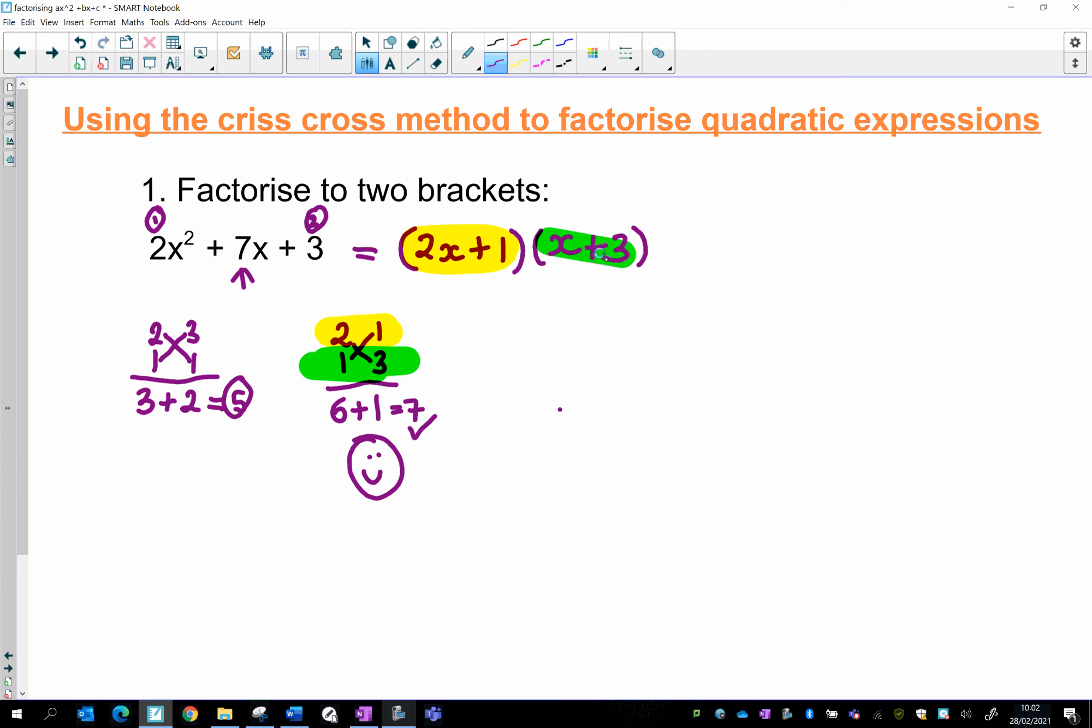If you want to, you could check now by removing the brackets. But I know that that is going to give me the right answer. If I do 2x plus 1 times x plus 3, if I remove the brackets, I'm going to do 2x times x. Well, I know that's 2x squared. Then I'm going to do 2x times 3. Well, that is 6x. 1 times x is x. And 1 times 3 is 3. And if I add together the two in the middle, sure enough, I get 7x plus 3. So that is correctly factorized. The brackets remove to give me the original expression.